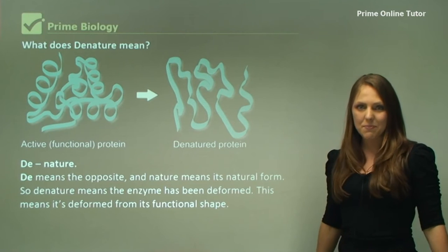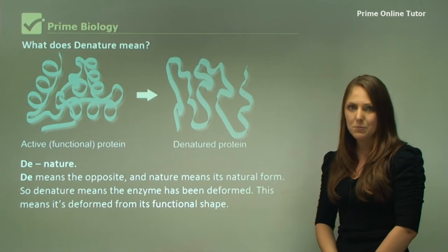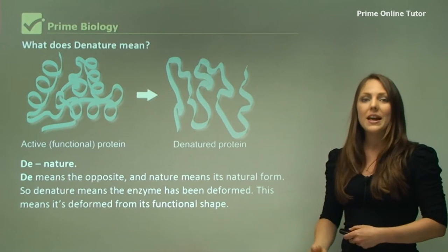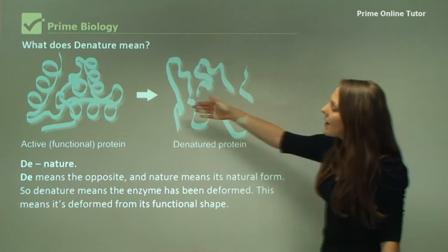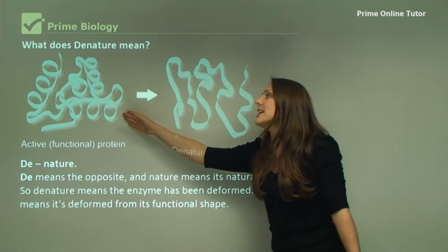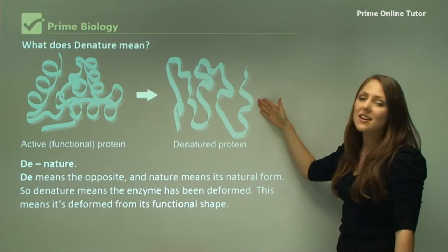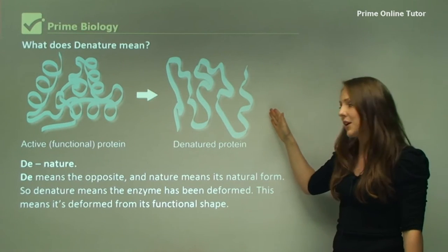What does denature mean? It's very important to understand this word. It comes up a lot in your textbook. So D means the opposite of and nature means its natural form. You can see here we have the functional form of the protein and if it's denatured it means that it changes from its natural shape. This protein here is denatured and that means that it's not able to perform its function.